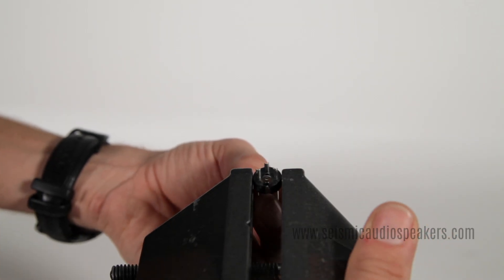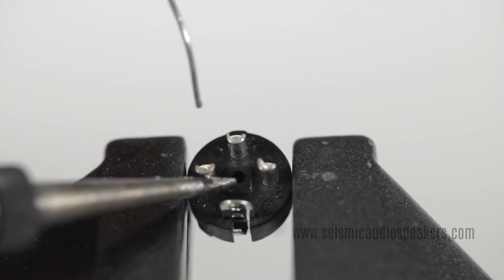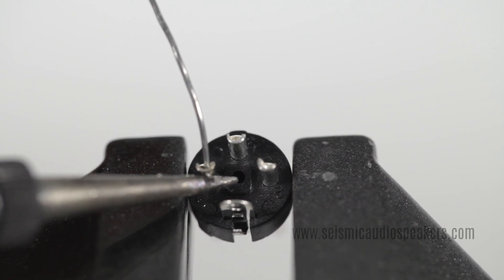Secure the connector in a small vise. Touch the soldering iron to the back of the cups to heat them. Once hot, touch the solder to the inside of the cup to fill it with solder.